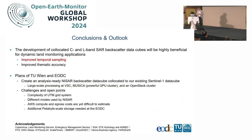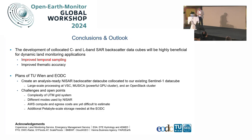In conclusion: I see extremely high value in developing a co-located C-band and L-band SAR backscatter data cube, with P-band also in mind, and a big benefit from co-location with Landsat and Sentinel-2. For flood and soil moisture monitoring, the improved temporal sampling and thematic accuracy will be very big gains. I hope that in four years a flood situation like the one we had in Austria will be covered very differently. We want to create a NISAR backscatter data cube co-located with our Sentinel-1 data cube in Vienna.